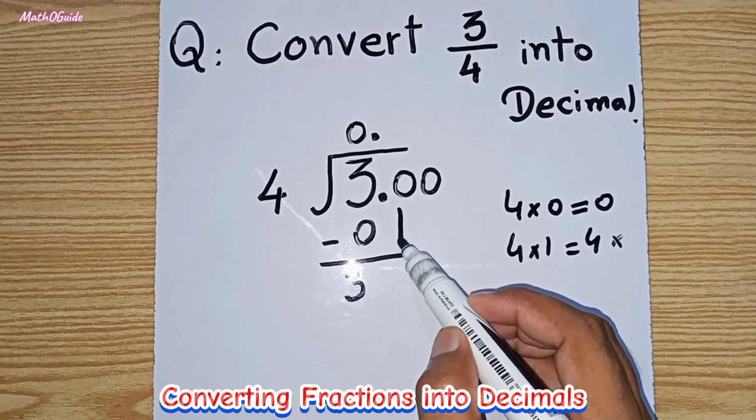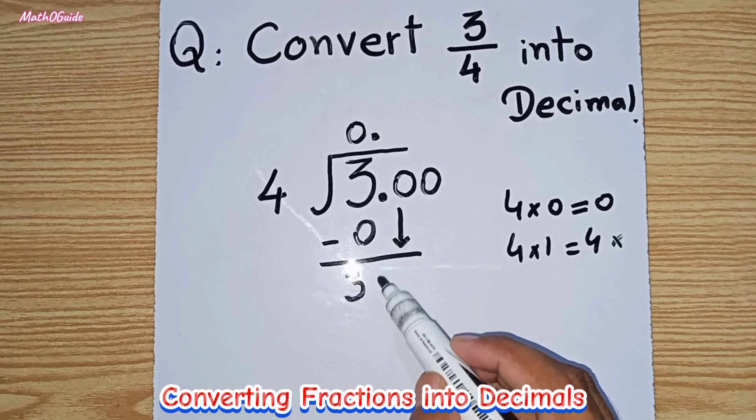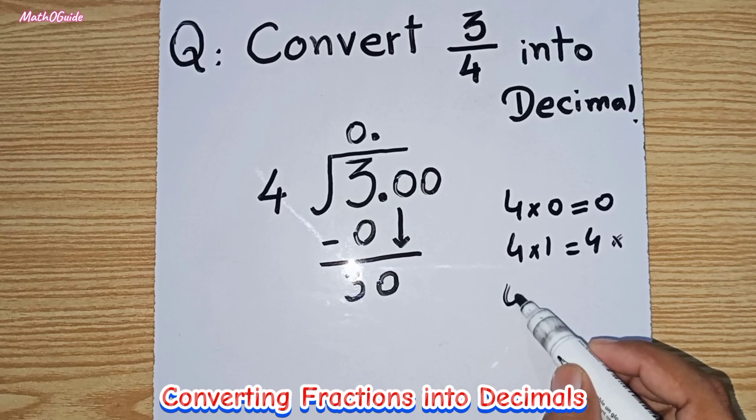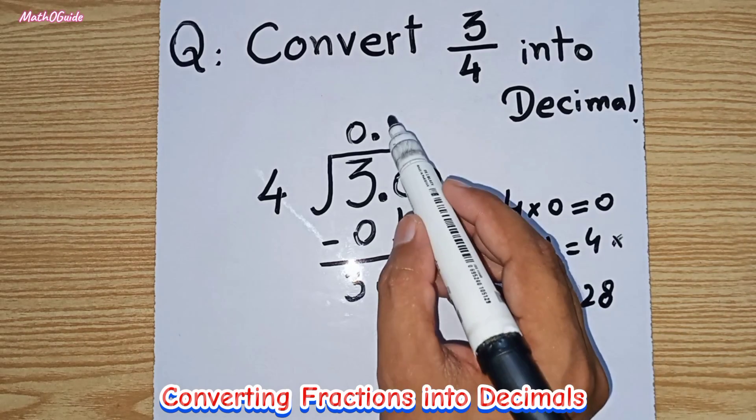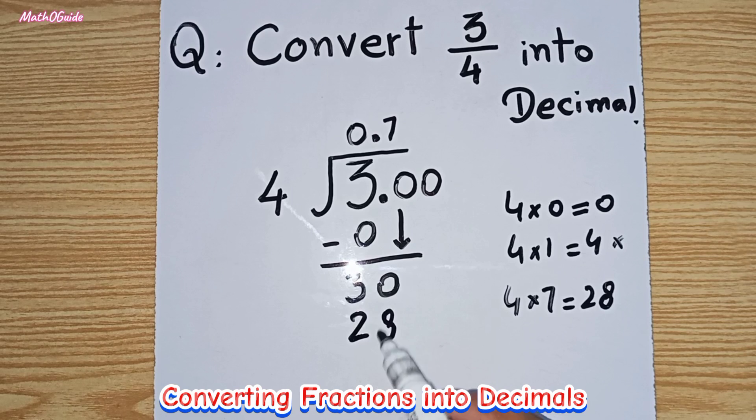Now we can bring down the first zero, the first digit after the decimal point, so it will become 30. As you know, 4 times 7 is 28, so we can apply this factor.